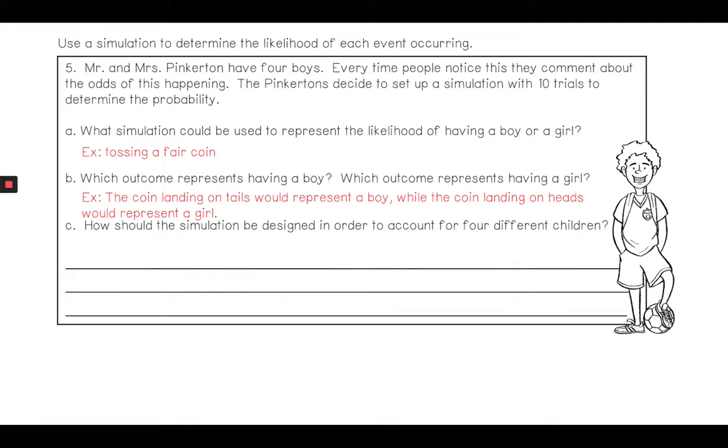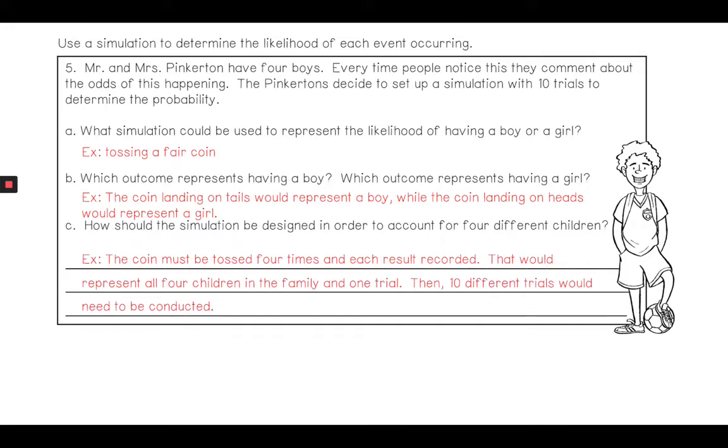How should the simulation be designed in order to account for four different children? Well in that case there are four different times that this happens, so the coin has to be tossed four times and the result recorded. Then 10 different trials would need to be conducted. So we would toss this coin four times, write down each event—that would be one trial. Then we would toss the coin four more times, write it down—that would be the second trial, all the way up to 10 different trials. That way you could see what was actually happening with the information.